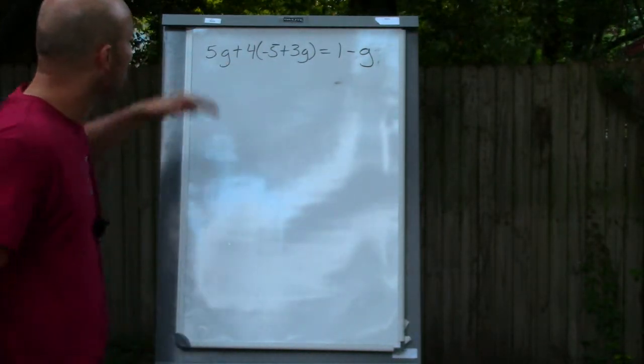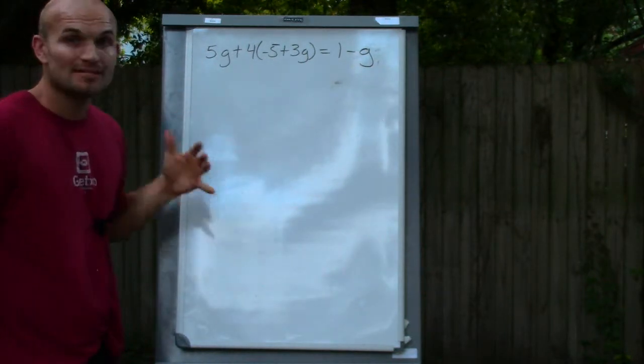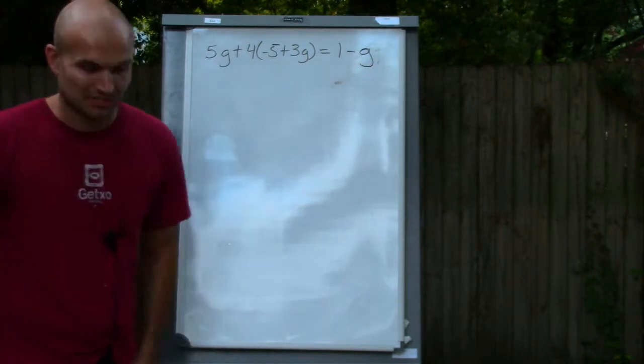Alright, let's get at it. Here what I have is 5g plus 4 times in parentheses negative 5 plus 3g equals 1 minus g.